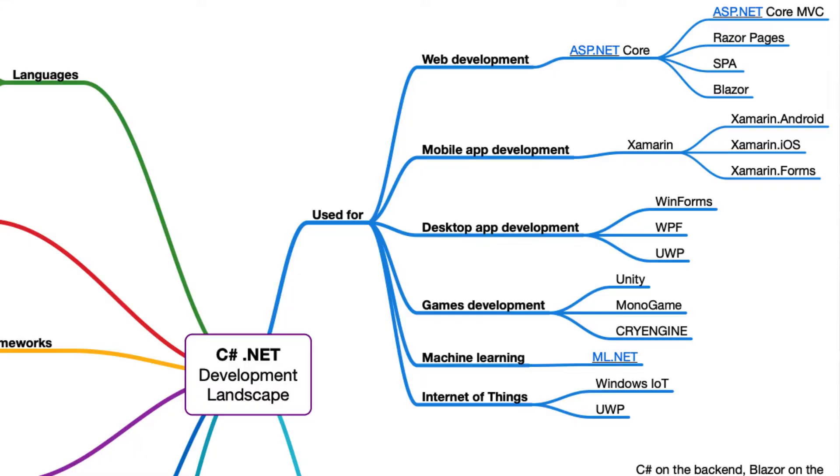The .NET ecosystem is a tool that Microsoft has created for those who use the C# programming language. So when you are recruiting C# developers, think about the use case — is it mobile app development, desktop app development, or games development? As you can see on the mind map, you would also recognize frameworks such as .NET Core, Unity, WinForms, or Xamarin, because these frameworks are used for a particular use case.